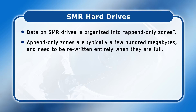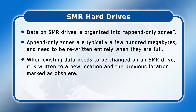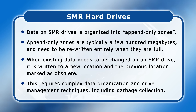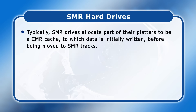To deal with the overwrite issue, data on SMR drives is organized into append-only zones to which data can only be added. Append-only zones are typically a few hundred megabytes in size and need to be rewritten entirely when they are full. Hence, when existing data needs to be changed on an SMR drive it's written to a new location and the previous location marked as obsolete. This requires complex data organization and drive management techniques including garbage collection. Drive management for an SMR hard drive is similar to that for an SSD where data can only be erased in blocks. Typically SMR drives allocate part of their platters to be a CMR cache to which data is initially written before being moved to SMR tracks.